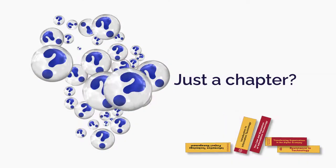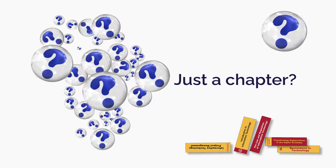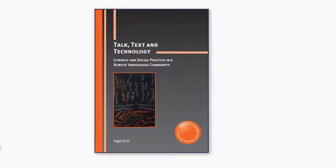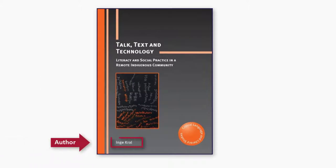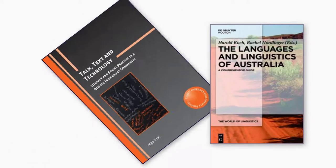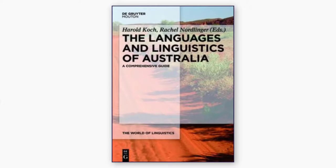Confused about how to reference a chapter in an edited book? The author of a book is the person who wrote the content of the whole book. Sometimes, however, an editor or editors will bring several other authors together to each write a chapter, which are then published as an edited book.